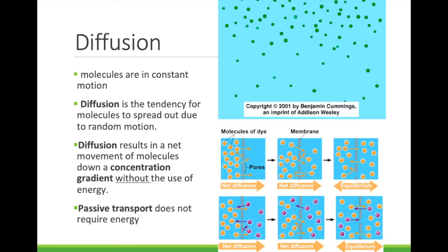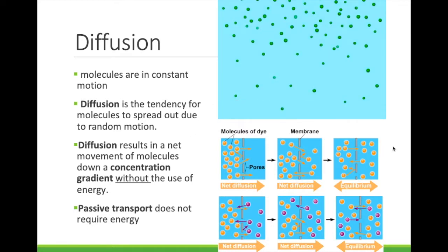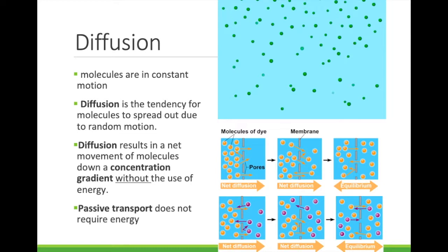The bottom picture shows the movement of two different solutes at the same time in two different directions. Each solute moves down its own concentration gradient — the yellow spheres are only concerned about the yellow spheres. They are not affected by the concentration of the purple spheres. The net diffusion of yellow spheres goes to the right, and the net diffusion of purple spheres goes to the left. The word 'net' refers to the overall movement. Some molecules do move in the opposite direction, but mostly they move in the direction of the net diffusion.